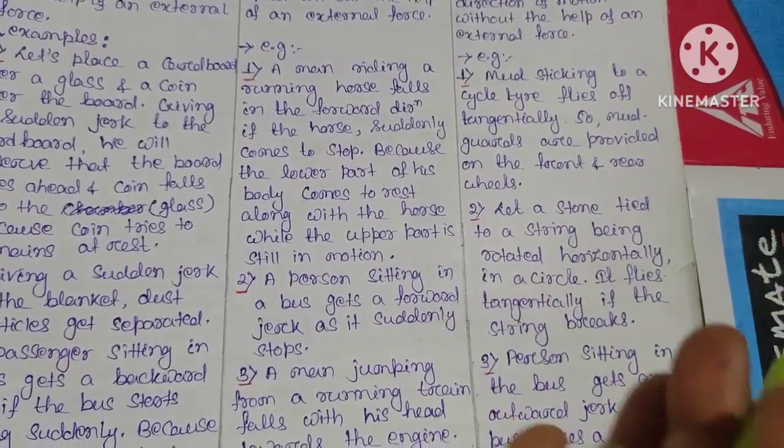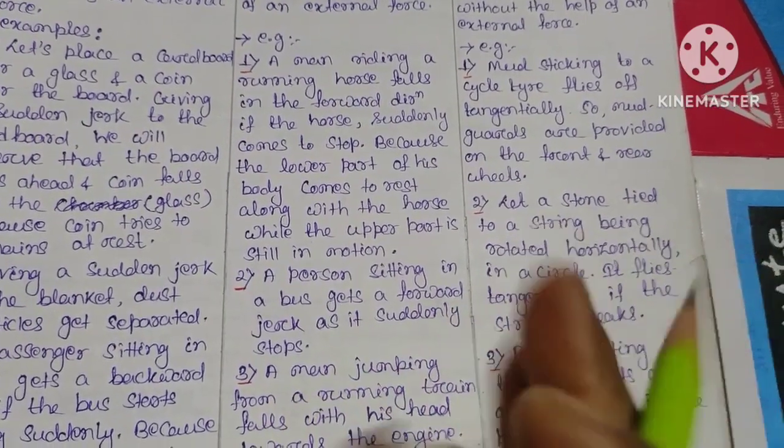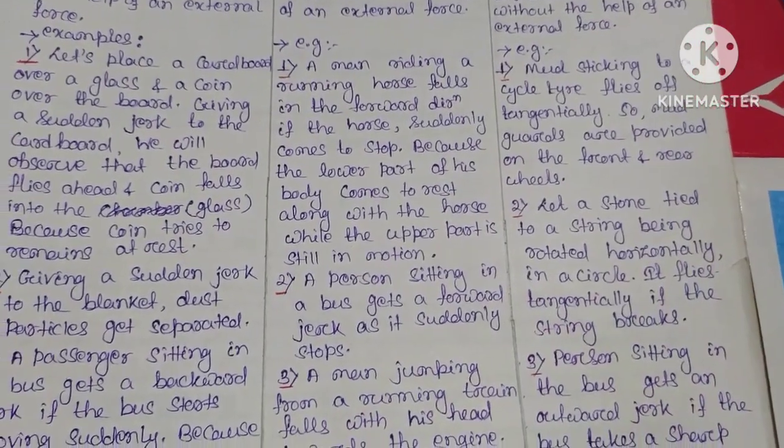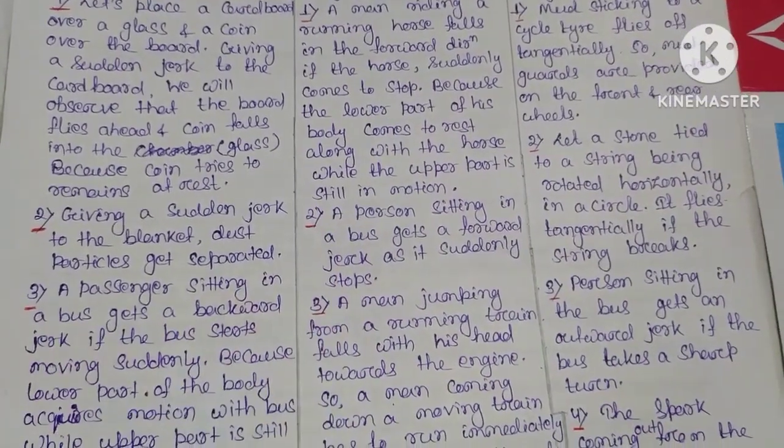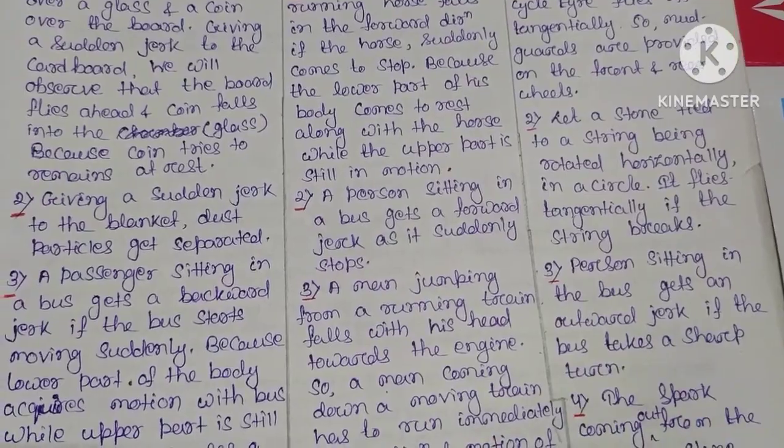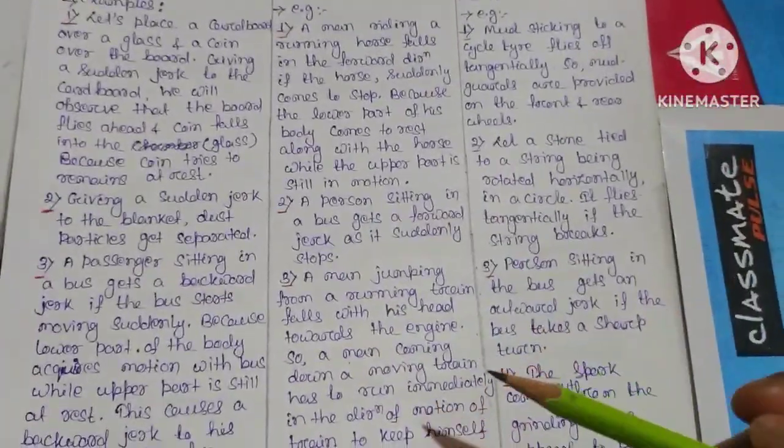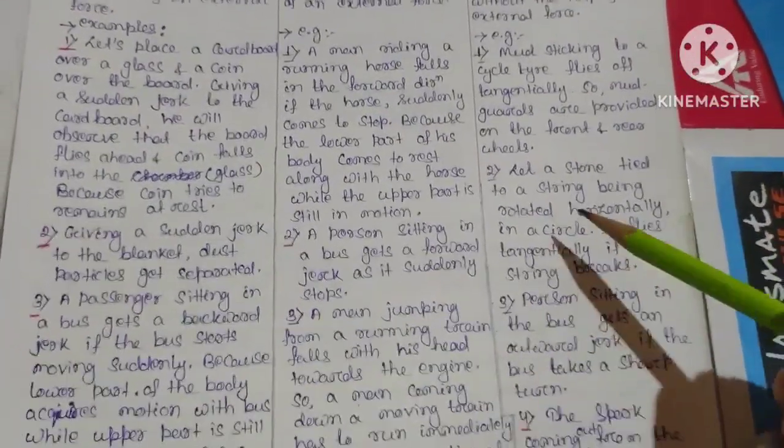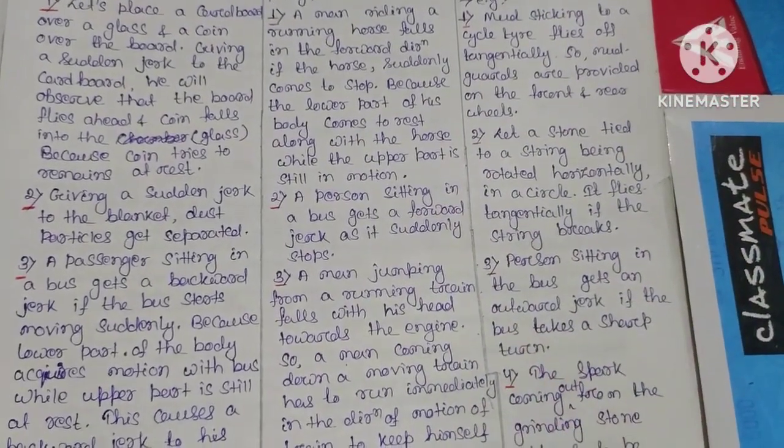So this is the type of jerk. When the bus stops, it's inertia of motion. When at rest and suddenly starts, it's backward jerk - inertia of rest. This covers the basic concepts. So thank you for watching the video.